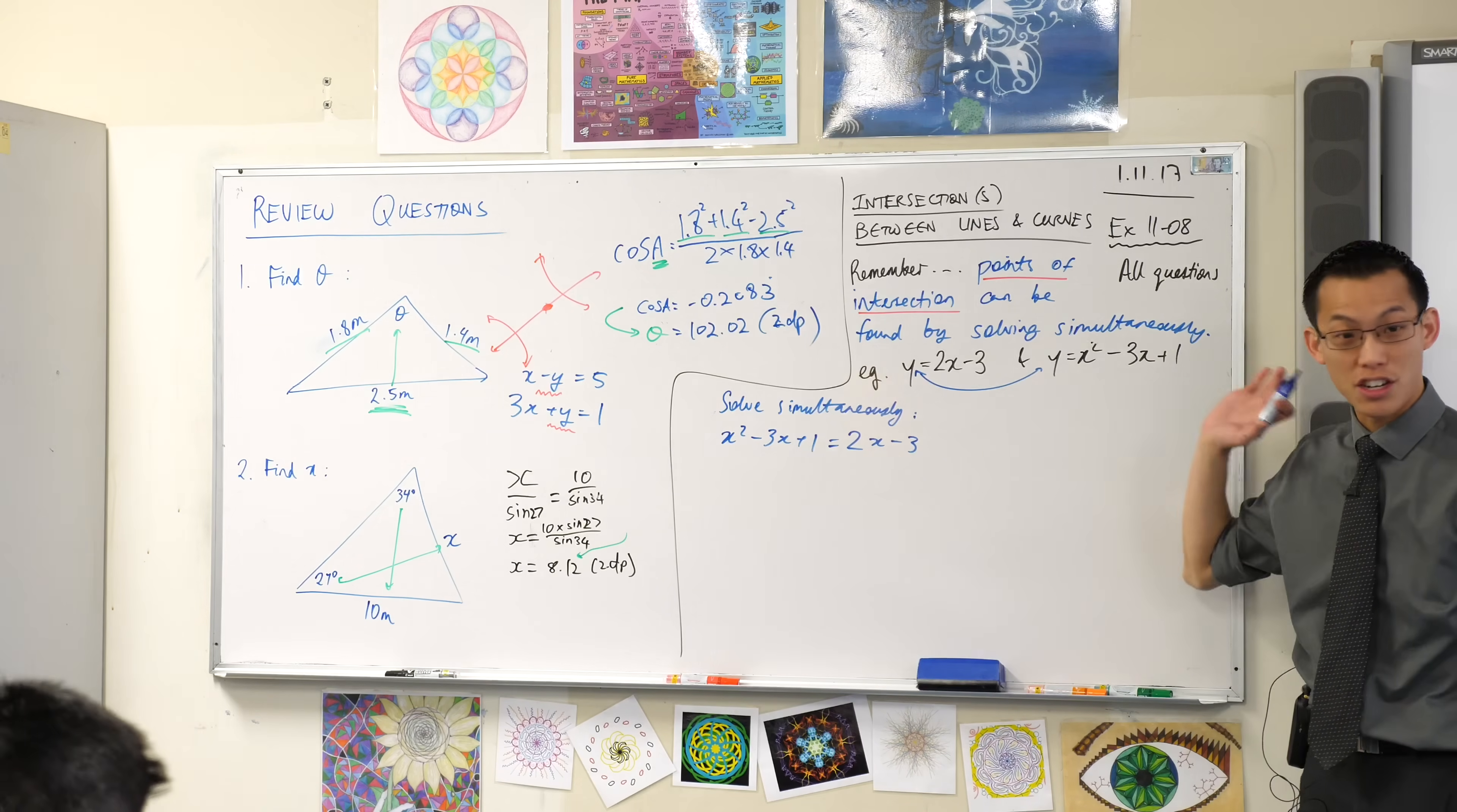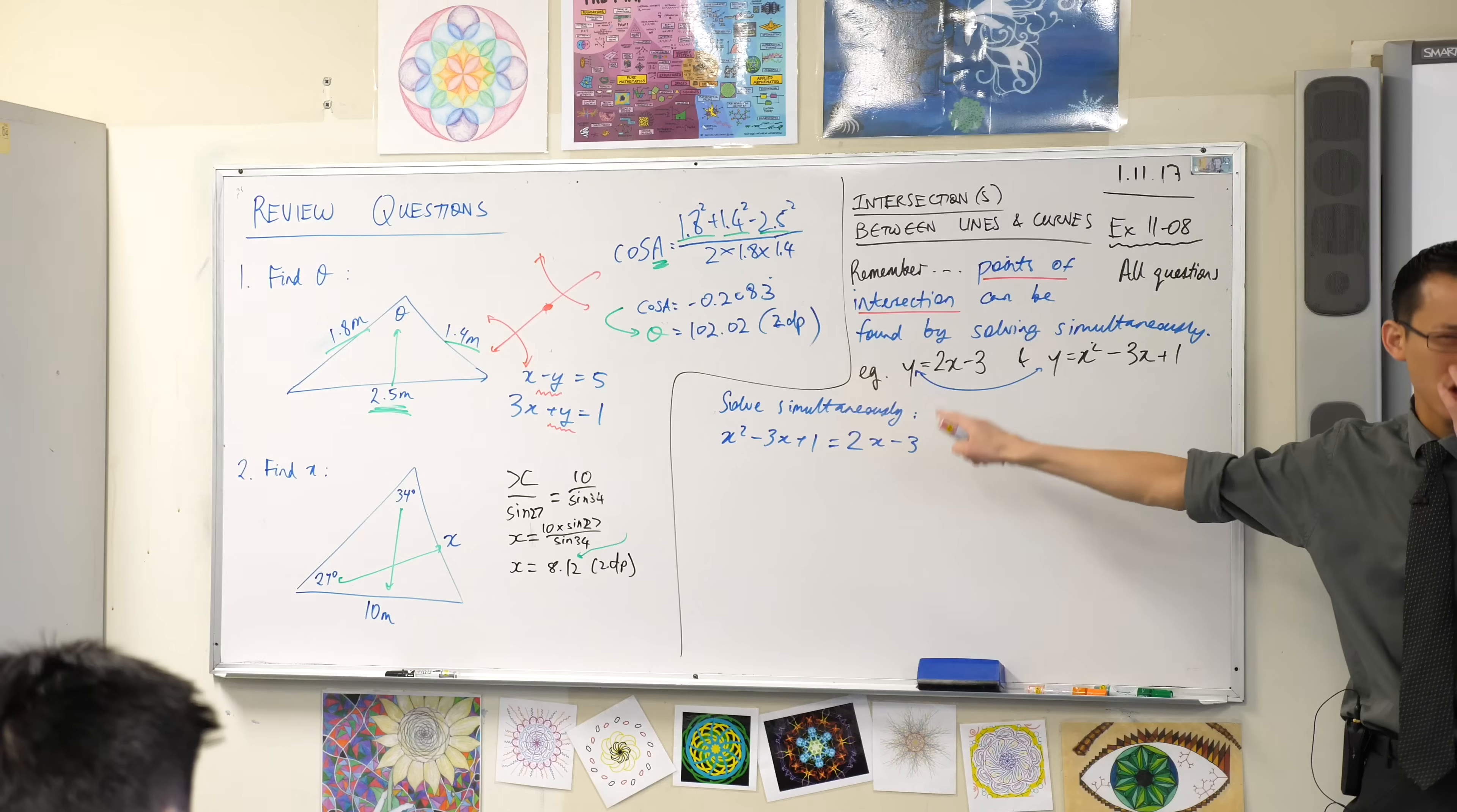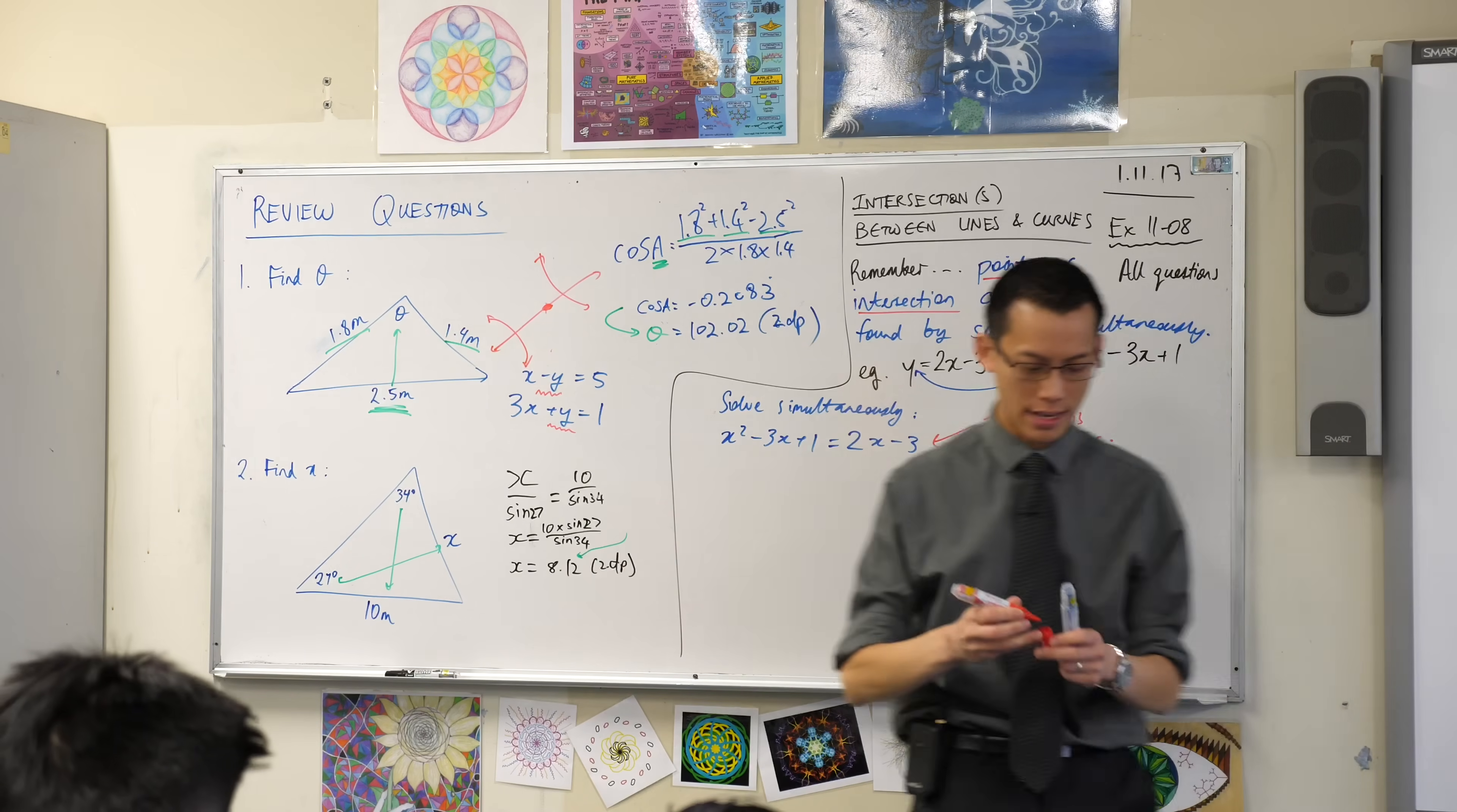Now what you've created is a new quadratic equation. The solutions of this are your points of intersection. Let me say that again, in fact I'll even write it. The solutions to this equation, the solutions are the points of intersection.